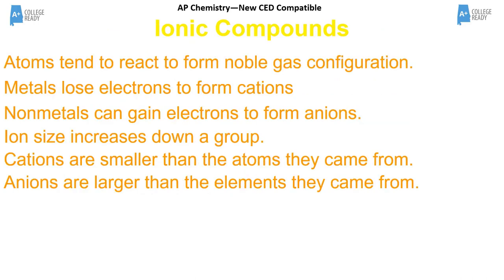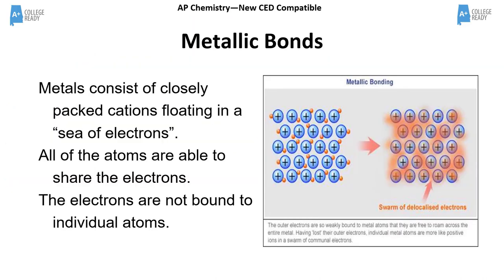We don't often write Lewis structures for ionic compounds, but basically everyone's trying to look like a noble gas. Metals tend to lose electrons and look like their closest noble gas; non-metals gain electrons. In doing so, they become ions. Metallic bonds are often simplified — there are positive metal nuclei and a sea of electrons.